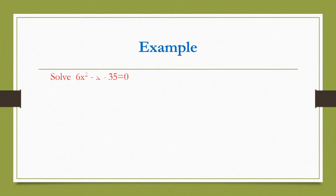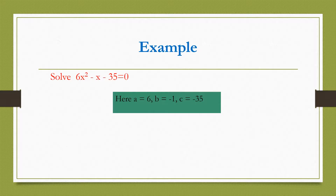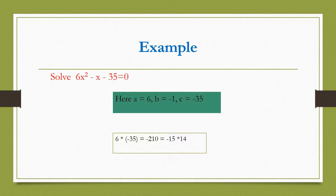Solve 6x square minus x minus 35 equals to 0. Comparing with the standard form ax square plus bx plus c equals to 0, here a is 6, b is minus 1, and c is minus 35. We need two numbers such that their product equals the product of a and c, and their sum equals b, that is minus 1. We find minus 15 and 14 are such numbers.